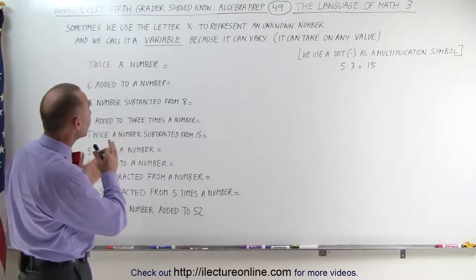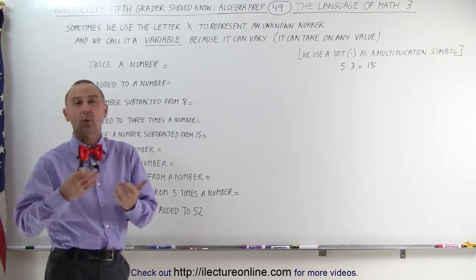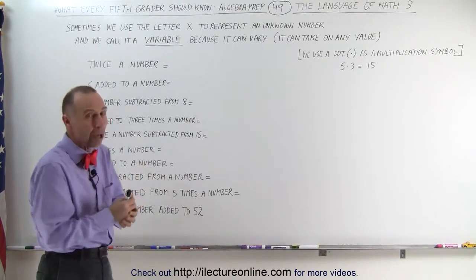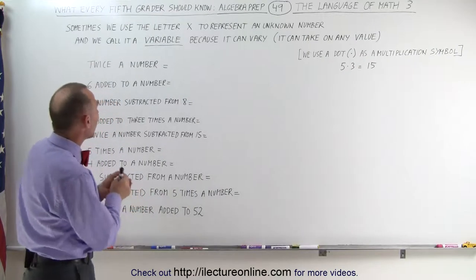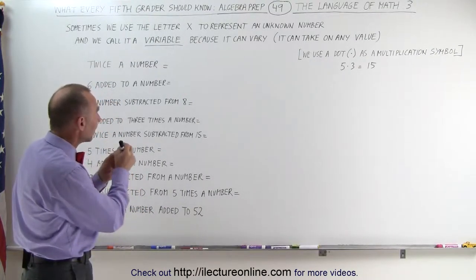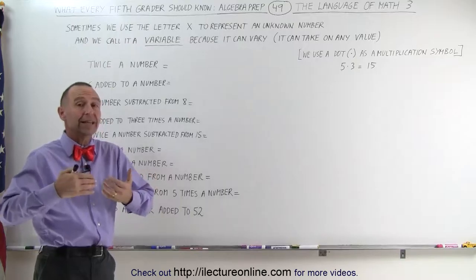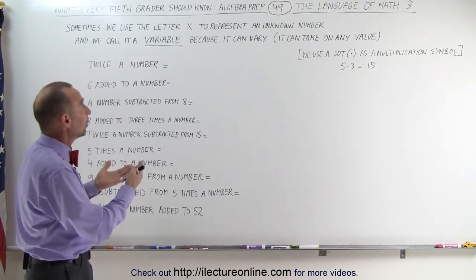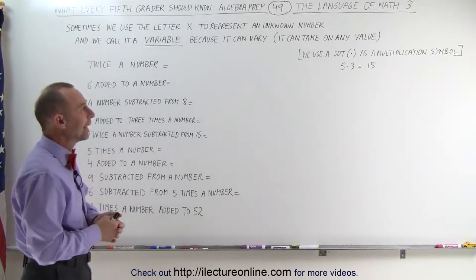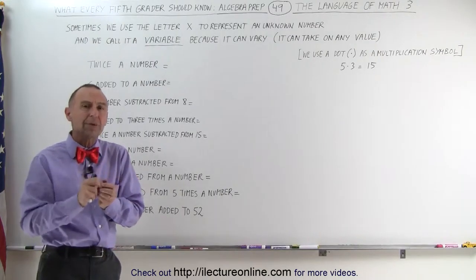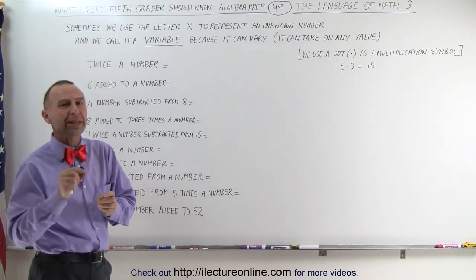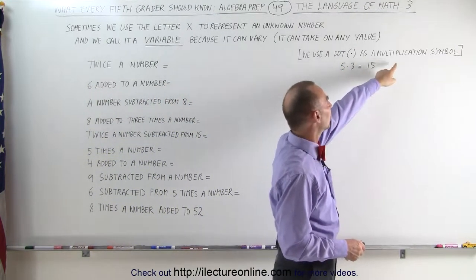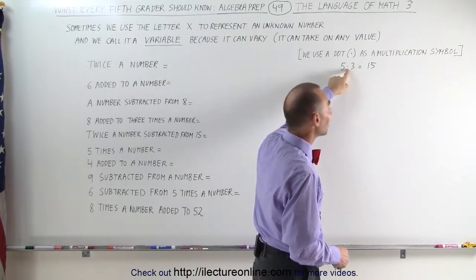Notice here that we sometimes use a letter — X, Y, or Z — and in our examples we're going to use the letter X to represent an unknown number. We sometimes call that unknown number a variable because it can take on any number, any random value, so it can vary. Because we often use X as that variable, we need a different symbol for multiplication, otherwise it gets confusing. So we use a dot as a multiplication symbol — we write 5 times 3 with a dot instead of an X.